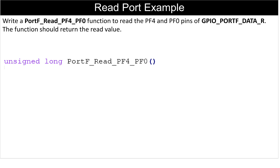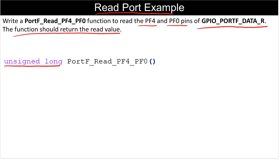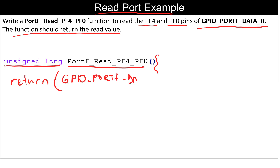In the previous example we saw how to initialize our ports. Now we will write a simple function to read our GPIO Port F data register. This function will read PF4 and PF0 pins, and it should return the read value. The return type is unsigned long. To read PF0 and PF4 we will be returning the GPIO Port F data register ANDed with hex value 0x11.